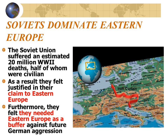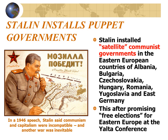The Soviets dominated Eastern Europe after suffering an estimated 20 million deaths in World War II, half of whom were civilians. They felt they deserved a buffer between themselves and the rest of Europe. They claimed an empire in Eastern Europe stretching from Denmark in the north to the Adriatic Sea in the south. Stalin installed puppet governments — satellite communist regimes — in Albania, Bulgaria, Czechoslovakia, Hungary, Romania, Yugoslavia, and East Germany, betraying his promise of free elections made at the Yalta Conference.